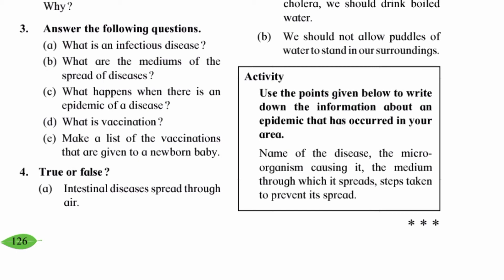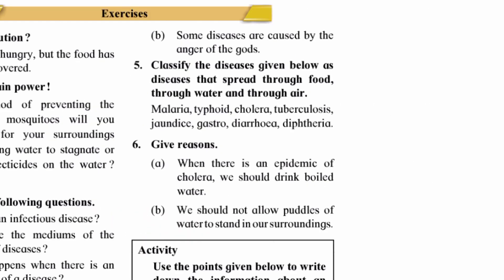Question four — True or False. A: Intestinal disease is spread through air. Answer: False. B: Some diseases are caused by the anger of the gods. Answer: False.